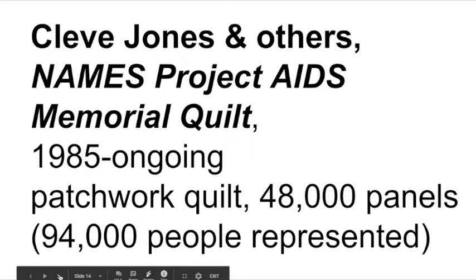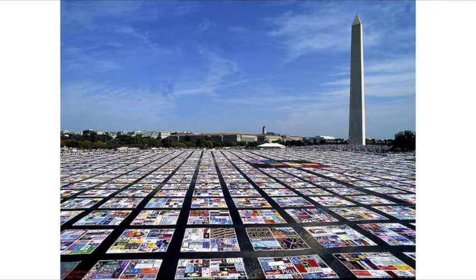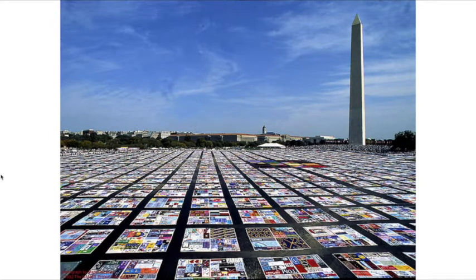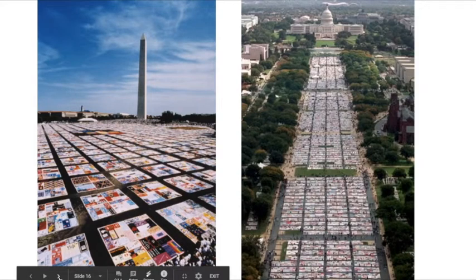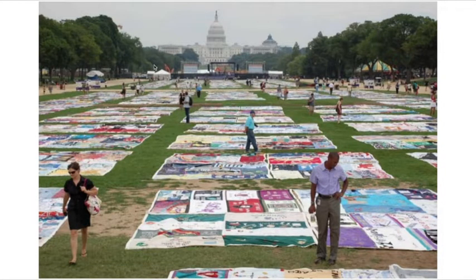A second work is Cleve Jones and others' Names Project — the AIDS Memorial Quilt. This is a patchwork quilt made of fabric, clothing, and jewelry, meaning it will ultimately degrade over time. It has been ongoing since 1985 and has been displayed at different moments in American history. Each four-square panel represents four people who died of HIV/AIDS. It raises the question of how we remember individuals lost to something that needs to remain in public memory. The quilt took up the entire lawn of Capitol Hill, and people were allowed to walk through and examine each panel, choosing which ones to see and moving on at their own pace.